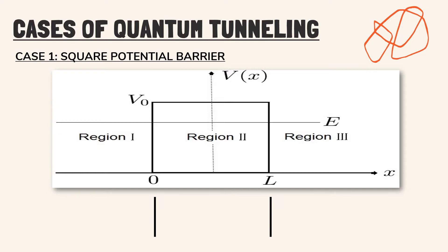And in region 3 to the right of the barrier, where x is greater than L and v is equal to 0, here the transmitted wave appears.